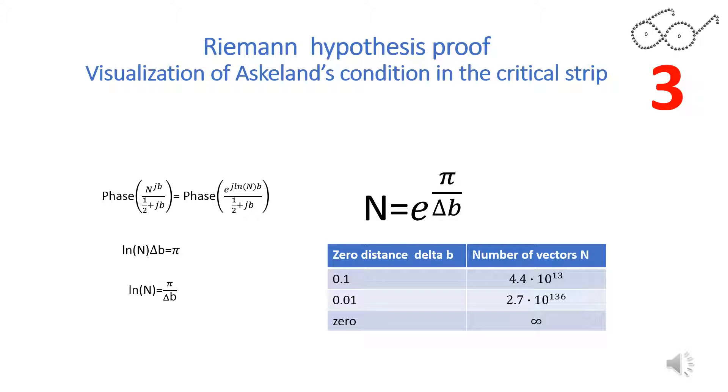n is the number of vectors of the zeta function. Setting the phase change to pi radians gives an equation where n can be solved. The distance between the zeros of Askeland's condition goes slowly to 0 as shown in the table.